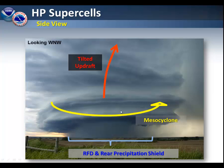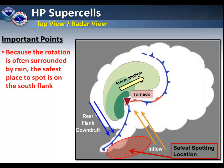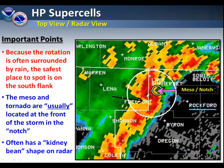Here is a side view of an HP supercell. Our tilted updraft is going basically into the screen. We have our rotating mesocyclone with it. You can notice the precipitation shield associated with it — you cannot exactly see where the rotation is occurring in the lowest levels of the atmosphere. Keep in mind with HP supercells that because the precipitation is surrounding any potential tornado activity, the safest place to spot is on the south flank of the storm. The mesocyclone and the tornado are usually associated at the front of the storm in the notch area, as in this example up near Rockford. Here is the notch located just to the southeast of Lake Somerset. Often this will have a kidney bean shape on radar.